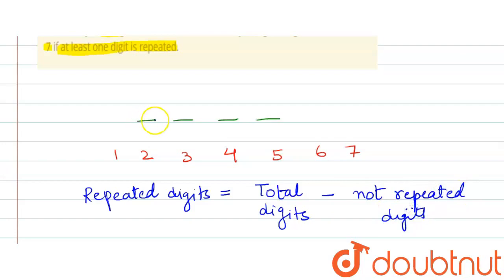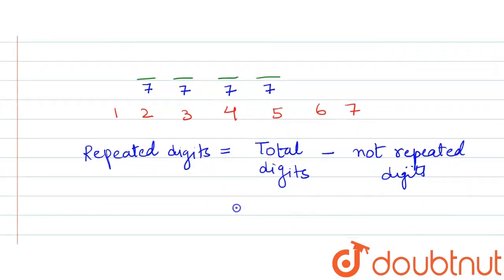So in how many ways this position can be filled? In 7 ways, this can also be in 7, this can also be in 7, this can also be in 7. So it is the total digits, that is 7 raised to the power 4.